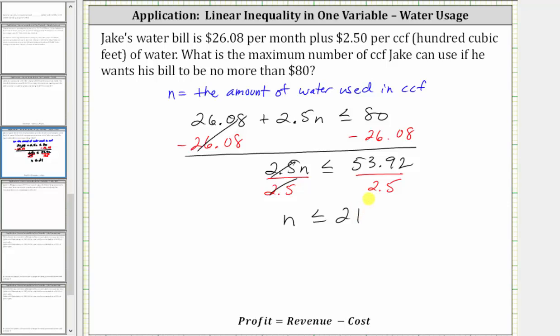This means Jake can use a maximum of 21 CCFs of water if he wants the bill to be no more than $80.